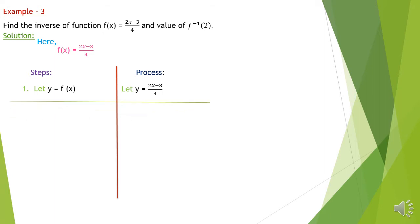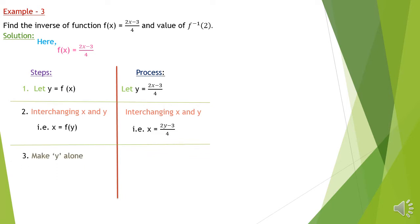The steps and process are shown simultaneously. The first step is to suppose the given function as y: let y = (x−3)/4. The next step is interchanging x and y — x takes the position of y, and y takes the position of x. So in our process, x and y interchange their positions — instead of y we write x, and instead of x we write y.